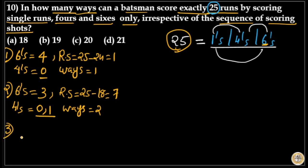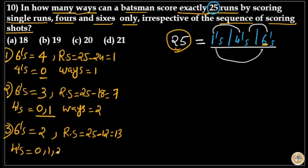In the third case, the number of sixes is 2. The remaining score is 25 minus 12, which equals 13. The number of fours can be 0, 1, 2, or 3, because 3 times 4 equals 12. So the number of ways is 4: either 2 sixes and 13 singles; or 2 sixes, 1 four, and 9 singles; or 2 sixes, 2 fours, and 5 singles; or 2 sixes, 3 fours, and 1 single.